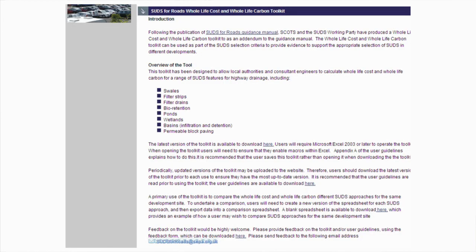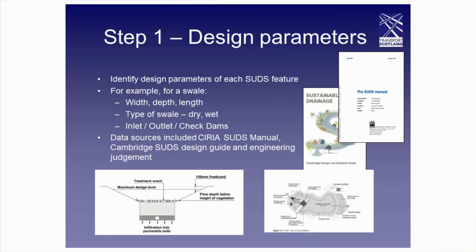The other tool we've developed, working with the SUDS Working Party and in particular SCOTS — the Society of Chief Officers of Transportation in Scotland — who led on this exercise, is the SUDS for Roads whole life cost tool. It's available on the SCOTS website. It's a spreadsheet with a series of algorithms and background data, plus a guidance manual. It is being used in Scotland, but we're seeking other organisations to use it and provide feedback so we can improve it. Step one was to identify the key design parameters — for a swale, for example, the width, type of swale and the outlet.